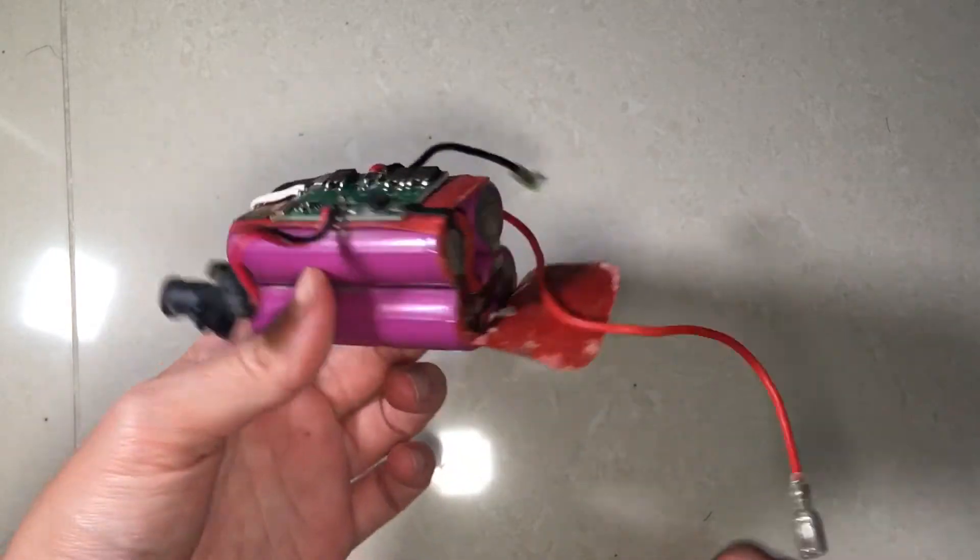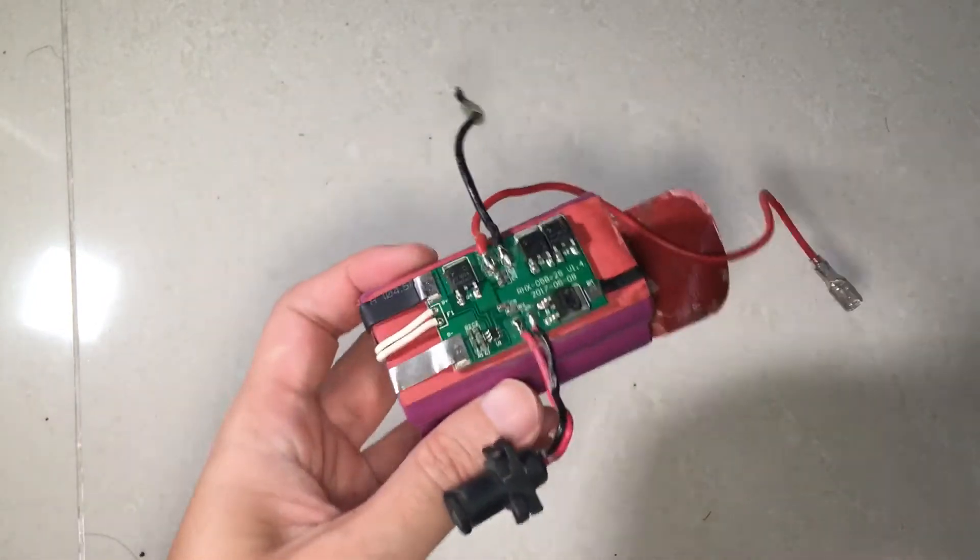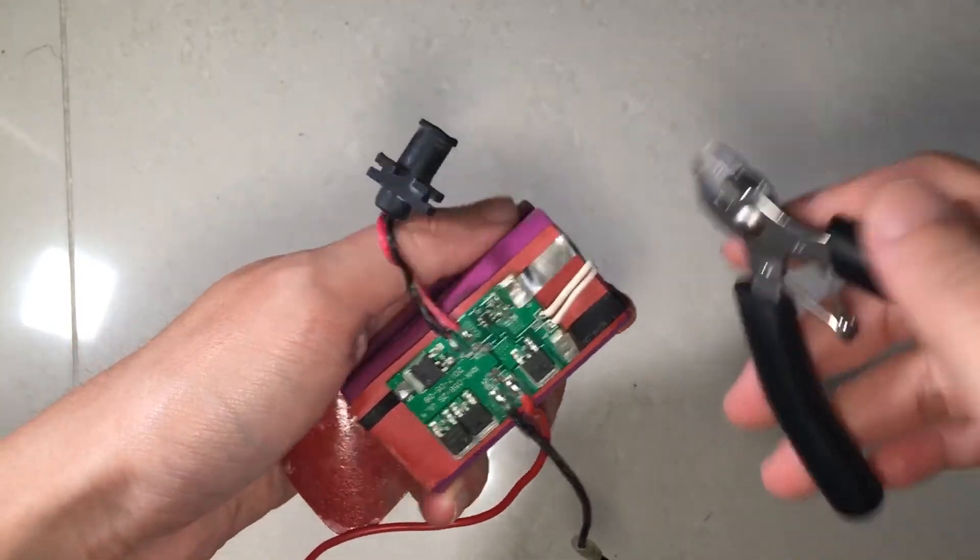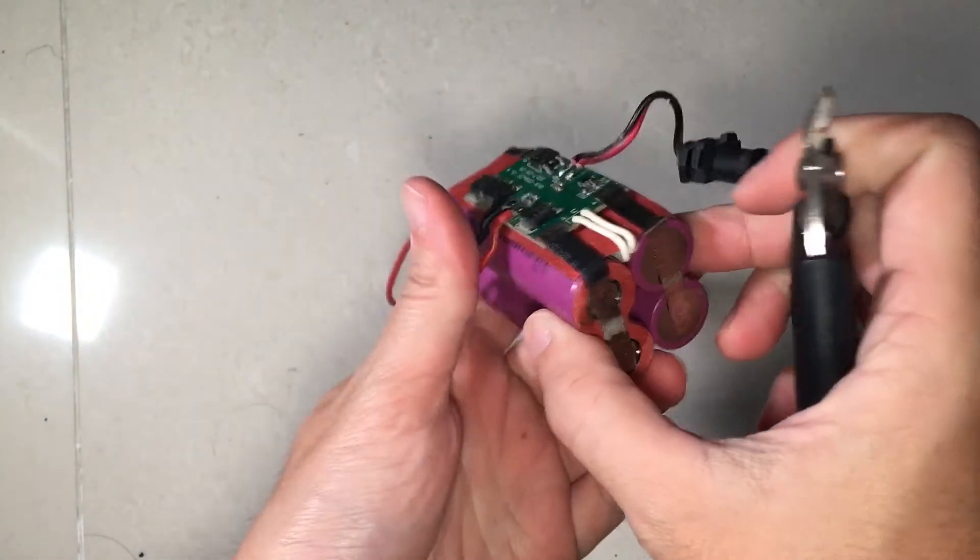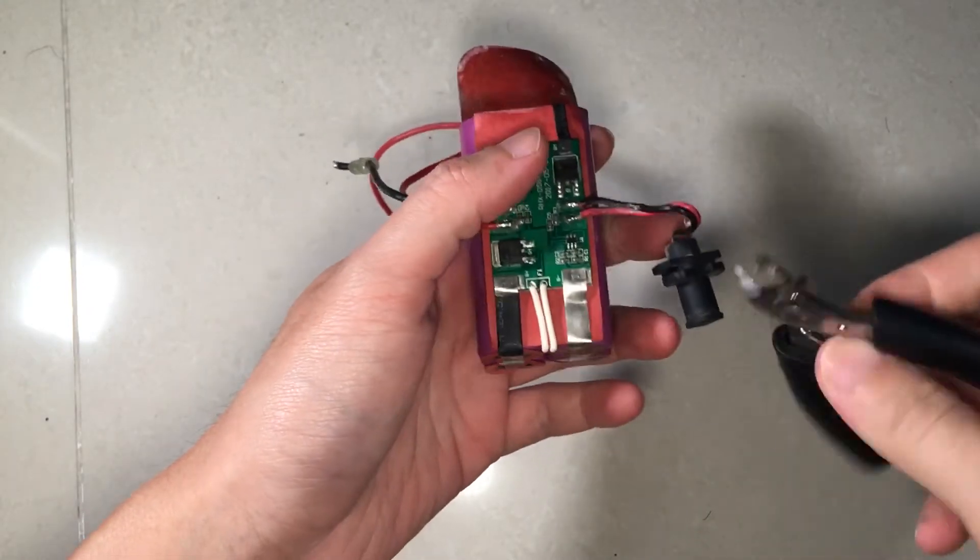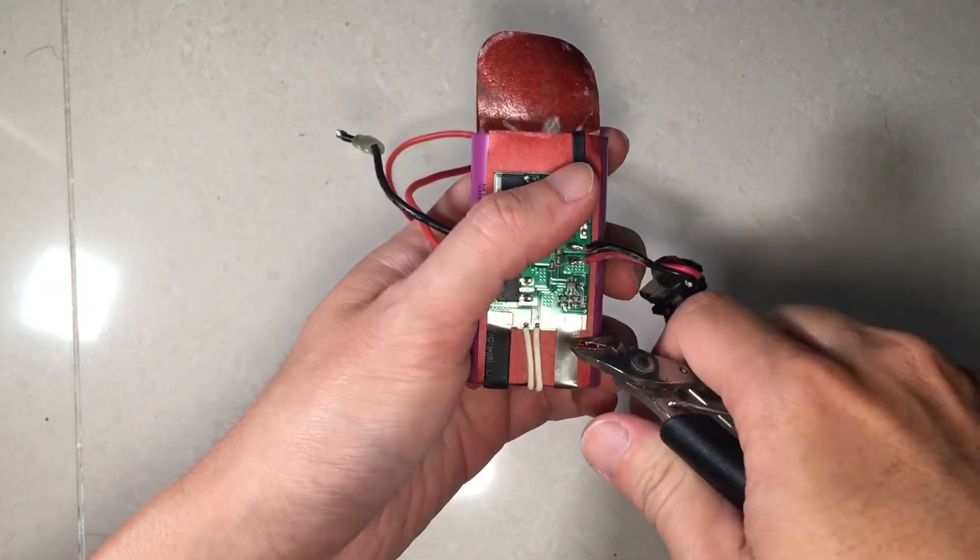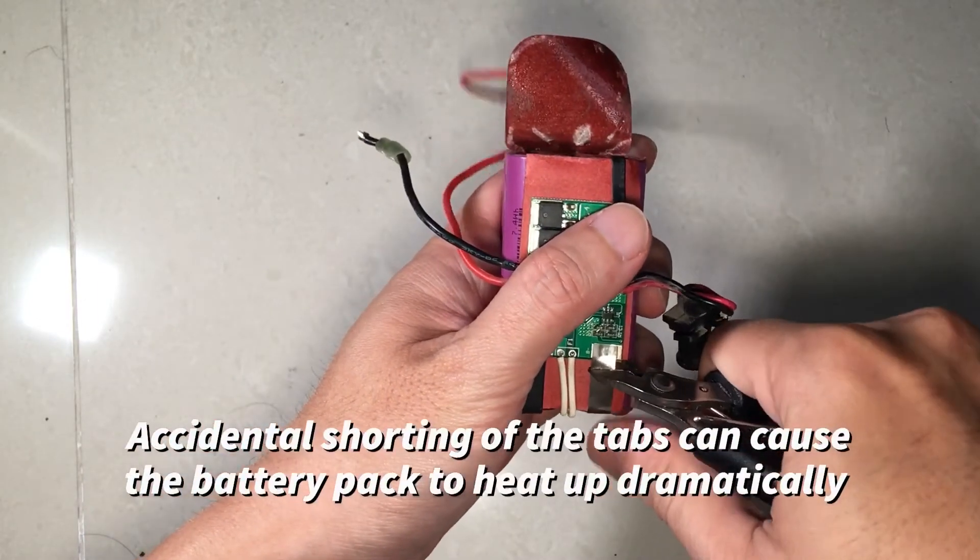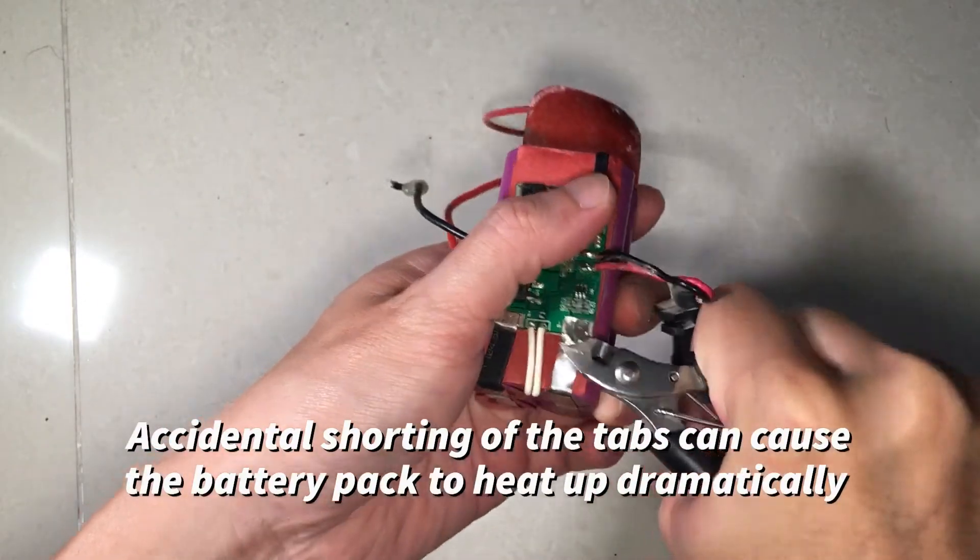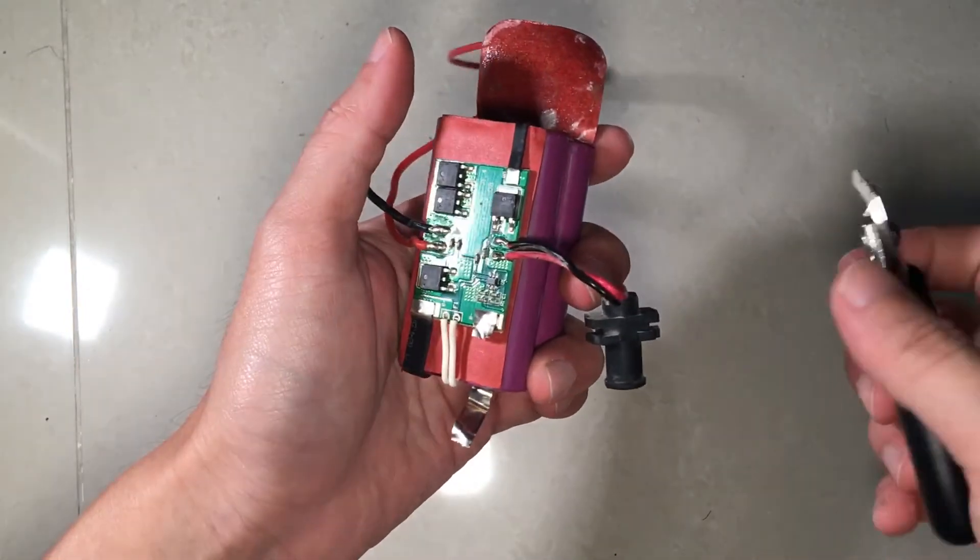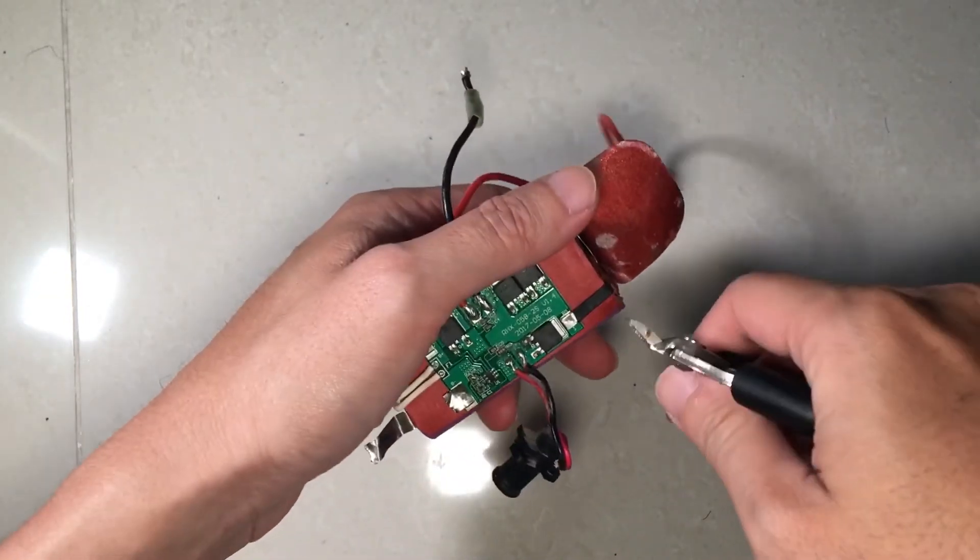Instead what I'll do is I'll salvage the working pair and discard the other pair. So to do this we will need to snip off the nickel tabs very carefully. While doing so, take note not to contact with any other parts of the battery or other tabs.